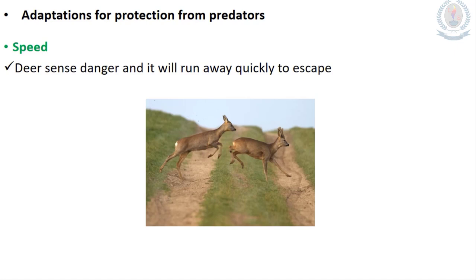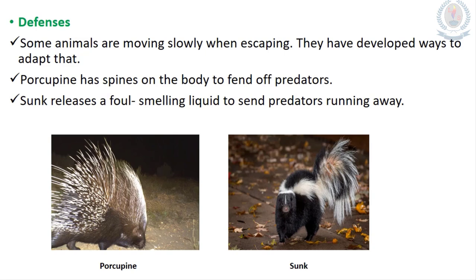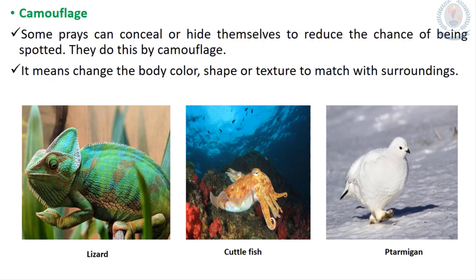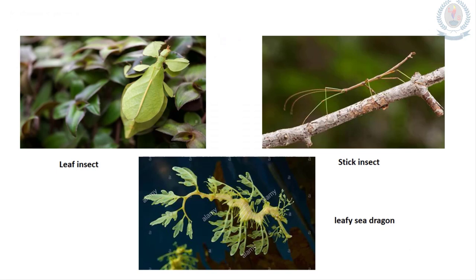Adaptations for protection from predators: speed is very essential — the deer senses danger and runs away quickly to escape. Some animals that move slowly have developed other defenses; the porcupine has spines on its body, and some animals release a foul-smelling liquid to protect from predators. Camouflage allows some prey to conceal themselves by changing body color, shape or texture to match their surroundings. Lizard, cuttlefish and chameleon are the best examples.